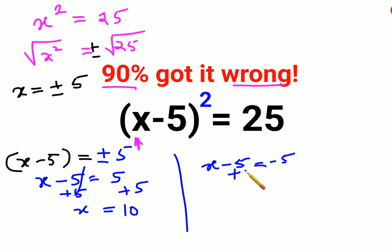Now similarly here also I will add 5 on both sides. So this gets cancelled and I am left with x equals minus 5 plus 5, that becomes 0.